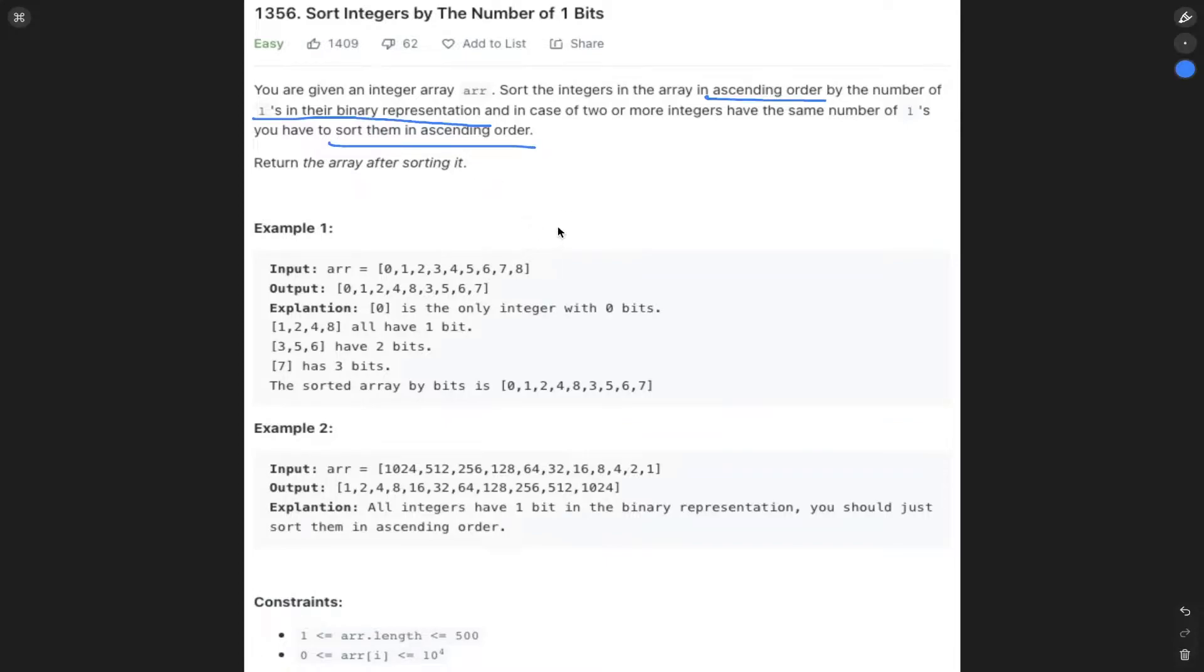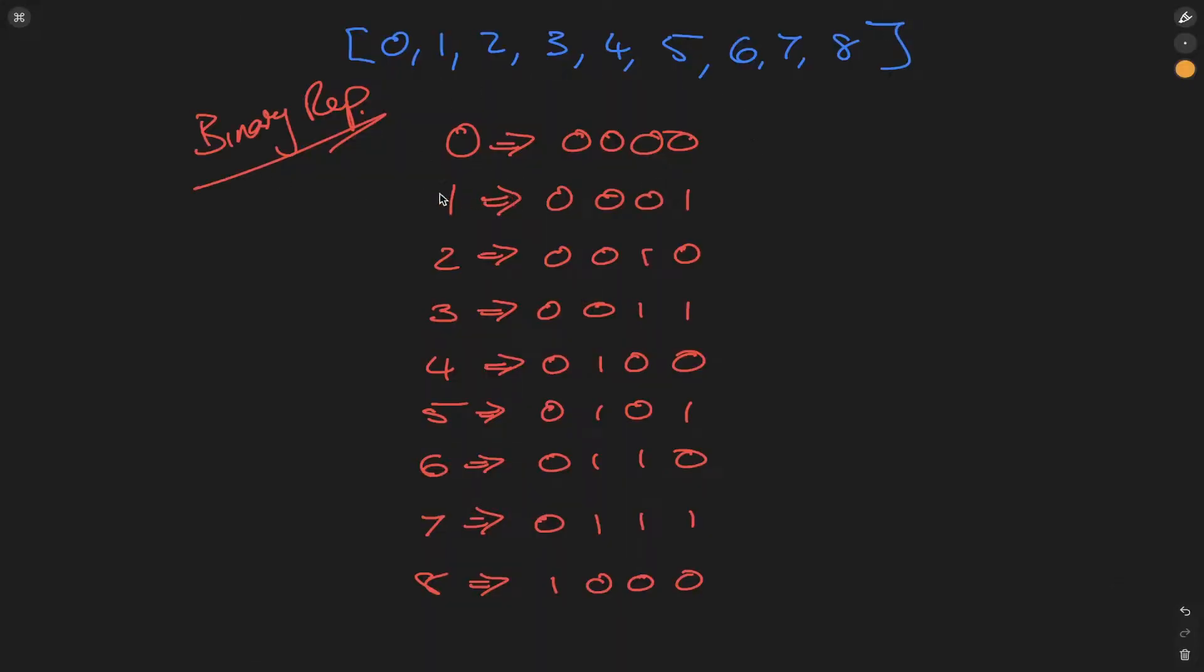Pretty interesting question. We have this array in example one and we've ordered it based on the binary representation of each of these values. As stated in the question, if the number of ones within the binary representation of these numbers are the same, then we need to order them based on ascending order. So let's dive into the walkthrough. Here is the binary representation of the integers from zero to eight, and we need to order these based on the number of ones we have within each of the binary representations.